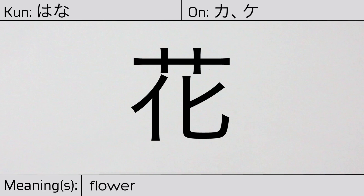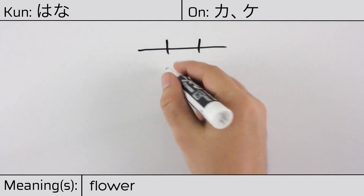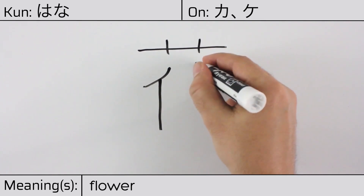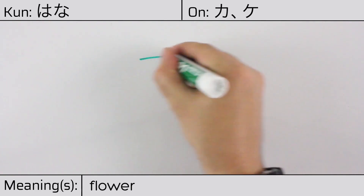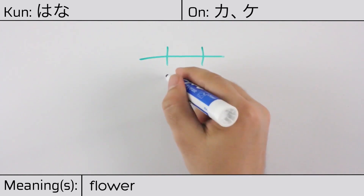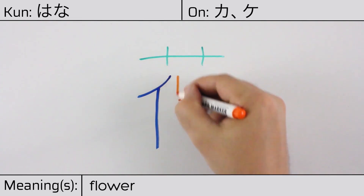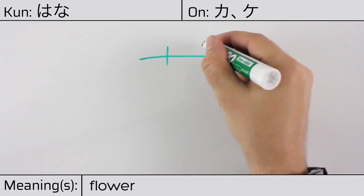Here is the stroke order. This character is made up of the following radicals or parts: Grass at the top. The stylized version of hito, or person, known as ninben, on the left. And the spoon radical, or saji, on the right. The bottom half of this character means change.